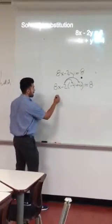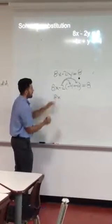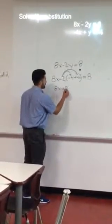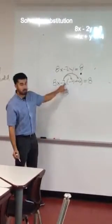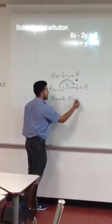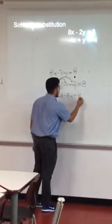I'm going to bring down 8x first, just so I know it's down there. Negative 2 times negative 4 gives me positive 8. Negative 2 times positive 4x gives me negative 8x. And then I bring down my equal sign and my 8.